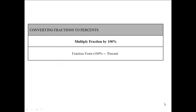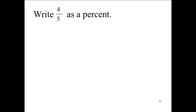Converting fractions to percents. When you convert a fraction to a percent, you multiply the fraction by 100%. You take the fraction form times 100%, and that will give you the percent. Write 4 fifths as a percent. We will multiply 4 fifths times 100% in order to change this to a percent.